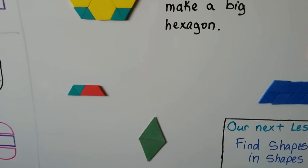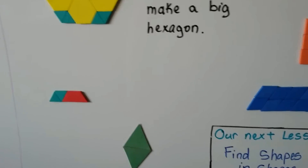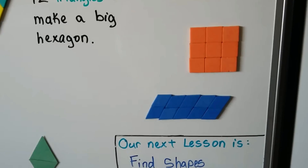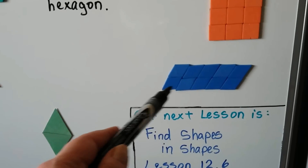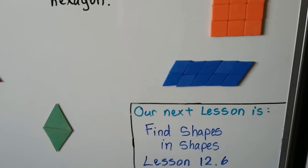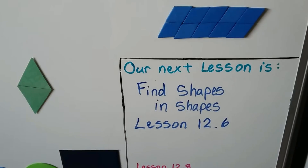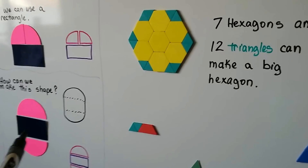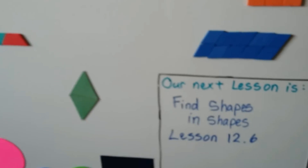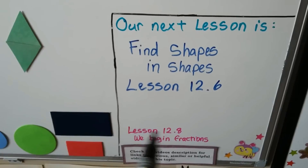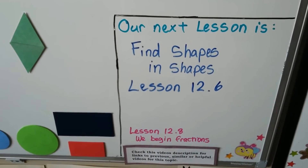So we can make new two-dimensional shapes from other shapes. Here are nine squares that made a big square, and here are rhombuses put together to make a very long parallelogram. Our next lesson is finding shapes within shapes — lesson 12.6 — just like finding the semicircle here. And this is all leading us toward lesson 12.8, where we begin learning about fractions.